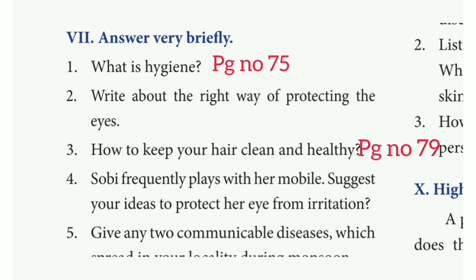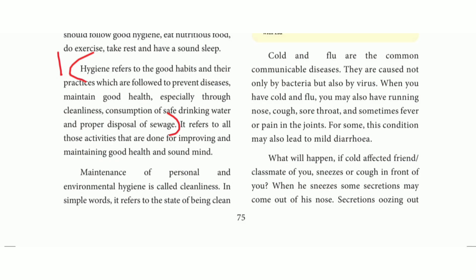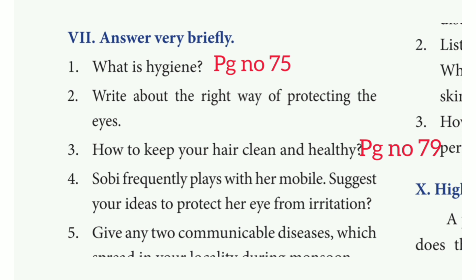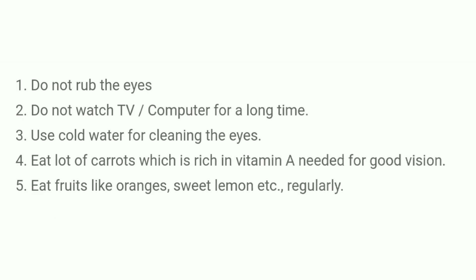Answer very briefly. 1st question: What is hygiene? Take page number 75. Hygiene refers to the good habits and their practice which are followed to prevent disease, maintain good health, especially through cleanliness, consumption of safe drinking water and proper disposal of sewage. 2nd question: Write about the right way of protecting the eyes. The answer is: do not rub the eyes; do not watch TV or computer for a long time; use cold water for cleaning the eyes; eat lots of carrots which are rich in vitamin A, needed for good vision; eat fruits like orange, sweet lime, lemon etc. regularly.